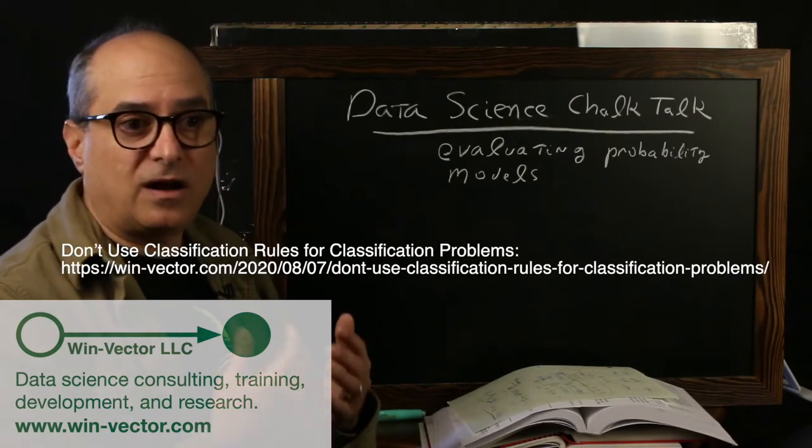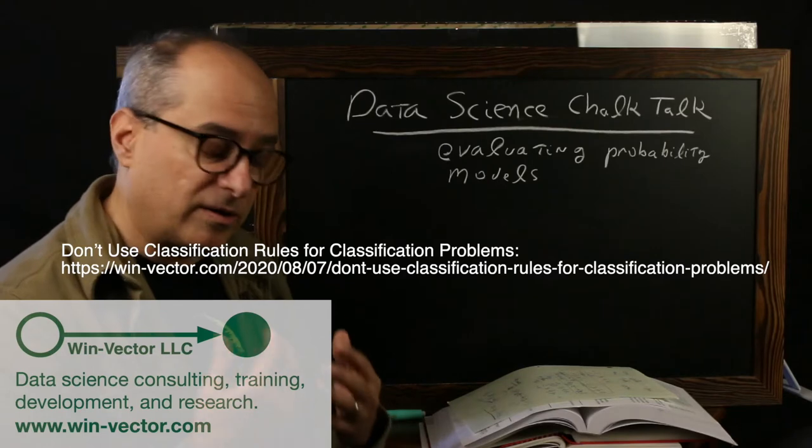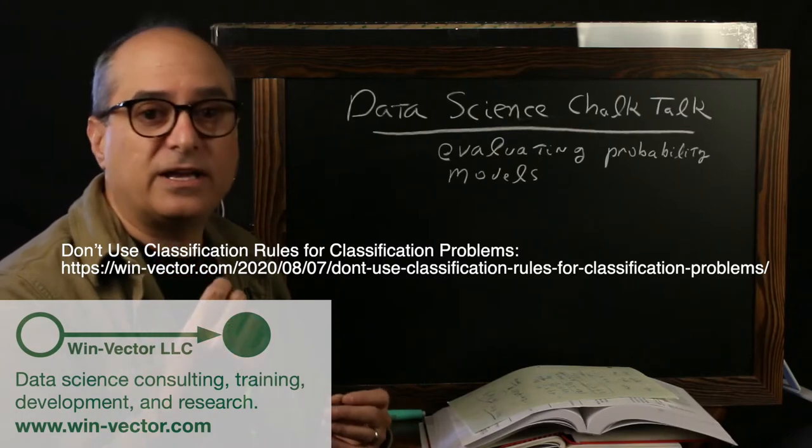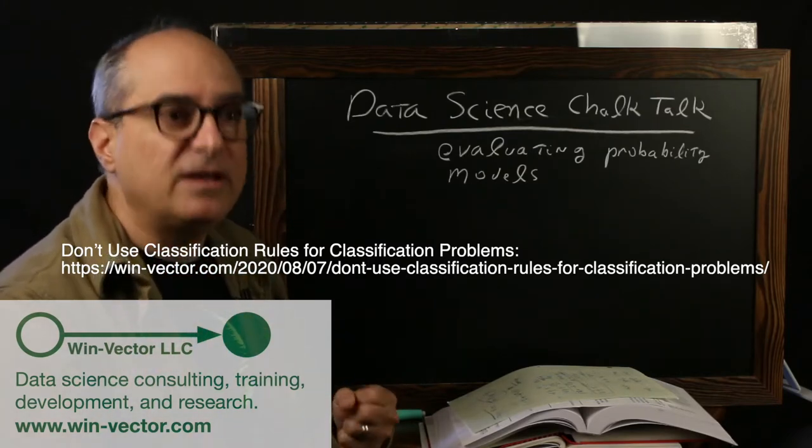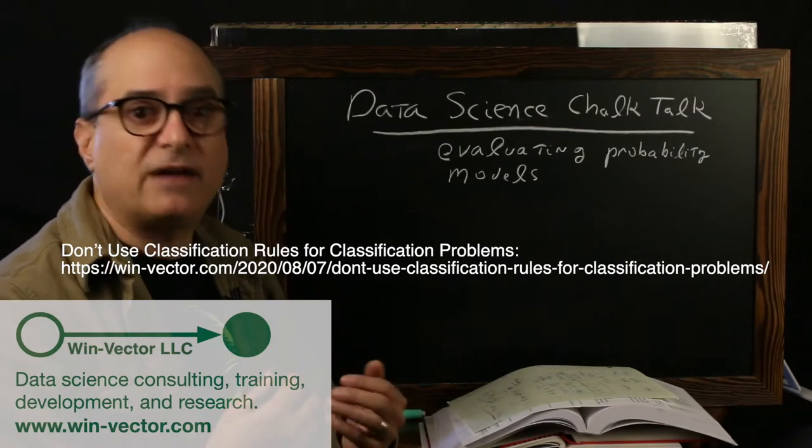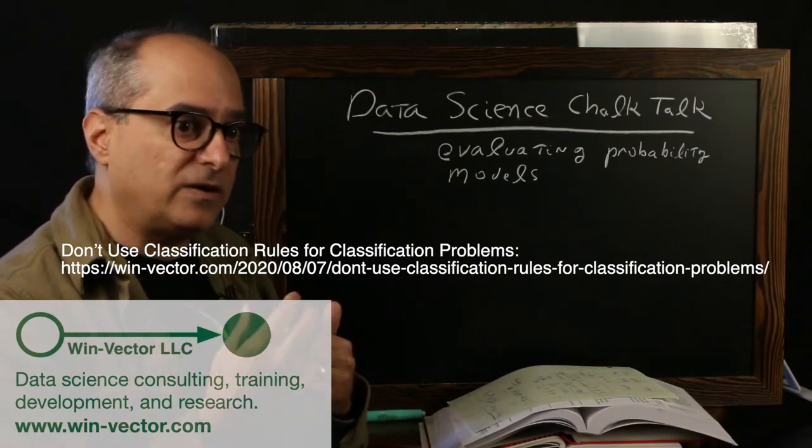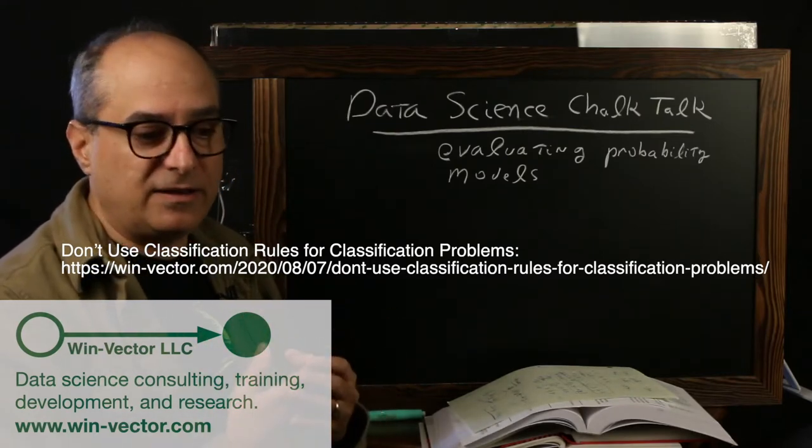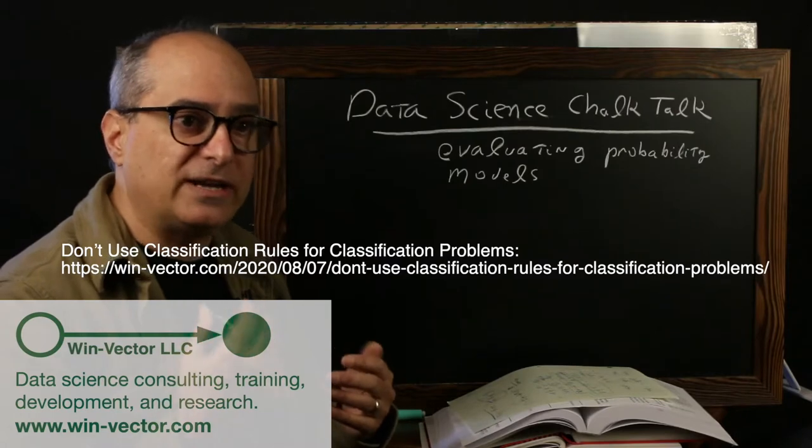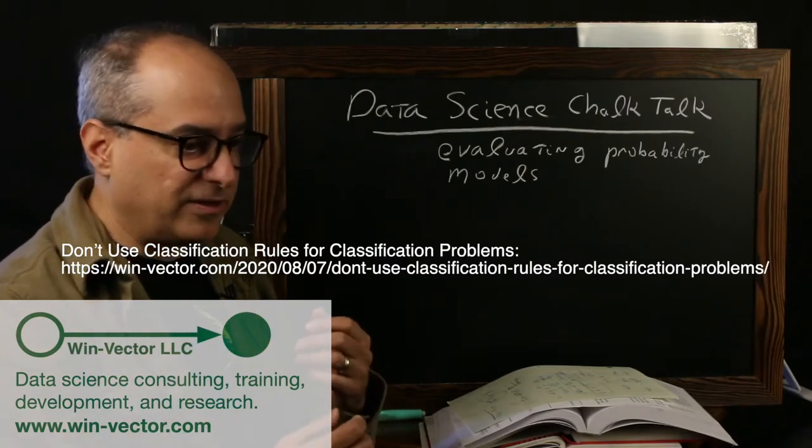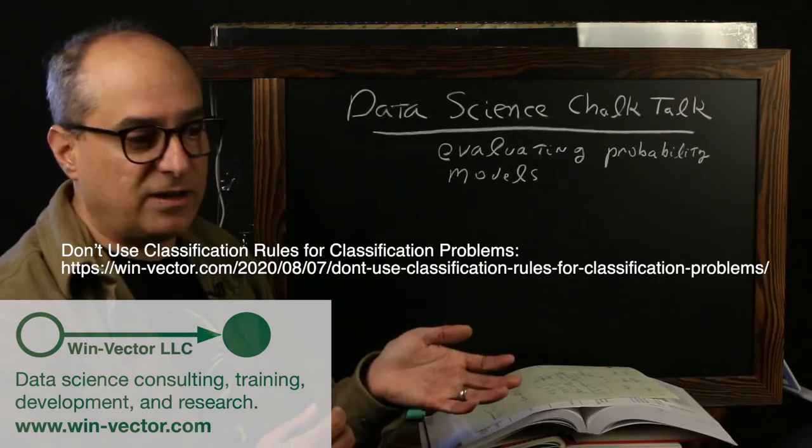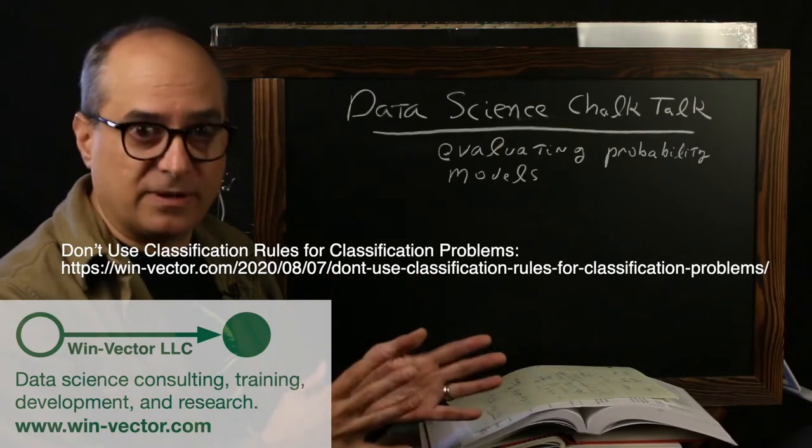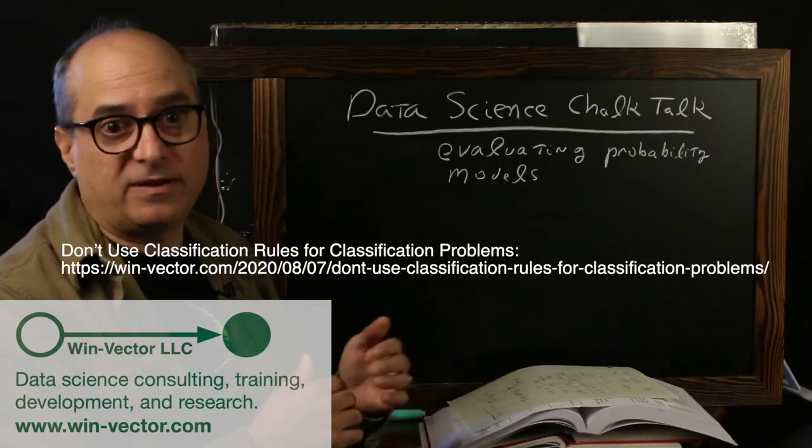The reason we say not to use hard classification rules or classifiers in their classifier mode is most of them are hard-coded to check if the probability is above a half. However, that performs very badly on unbalanced data sets as the models often degenerate into saying nothing will ever happen. They cannot tell the difference between a person that has a 1% chance of clicking on an ad and a person that has a 5% chance of clicking on the ad, which are radically different people in our world, but are basically both probabilities below a half.